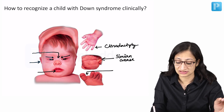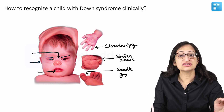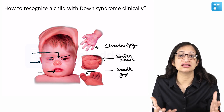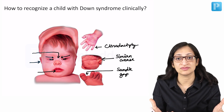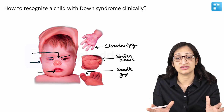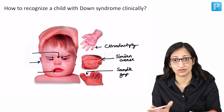You can also appreciate the increased gap between the great toe and the rest of the toes, which is known as sandal gap. These are some features by which, readily looking at the baby, you can make out that probably the baby is suffering from Down syndrome.